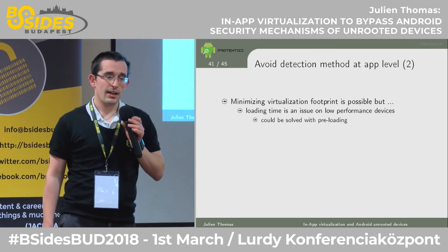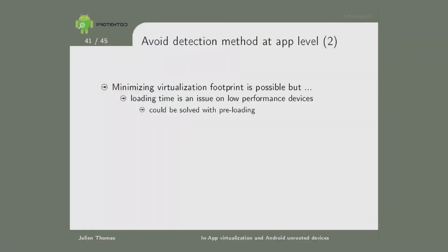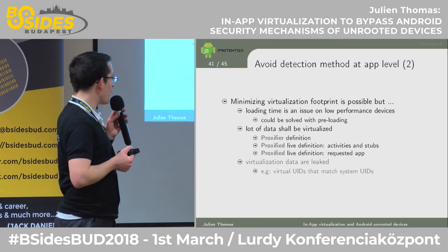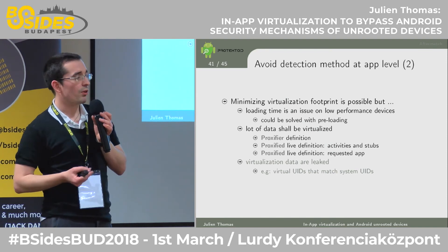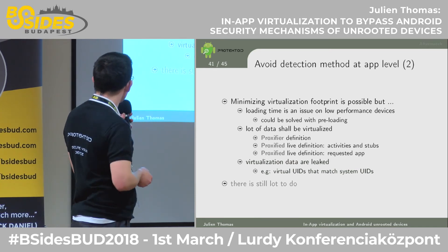Some issues we still have: time loading is a very big issue with virtualization — unless on a very good device it slows down execution, so we try to solve that by preloading the virtualized app. There's a lot of data to proxify if you want to hide your footprint — you have to hide the proxifier definition and play a lot with that. Sometimes virtualization data still leaks: for example, if the proxifier libraries don't handle path matching correctly, some requests are redirected to the system without being re-proxified, making you visible to the proxified app and detectable.